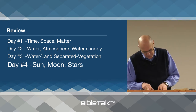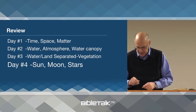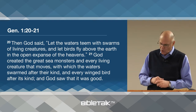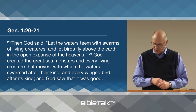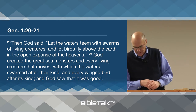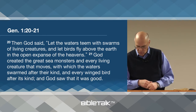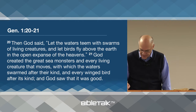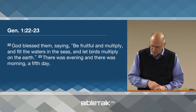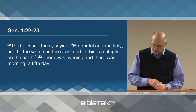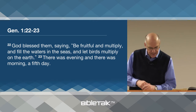In this lesson we're going to continue with the fifth day and the creation of the next order of life. Let us look at Genesis chapter 1, verses 20 and 21. It says: 'Then God said, let the waters teem with swarms of living creatures and let birds fly above the earth in the open expanse of the heavens. God created the great sea monsters and every living creature that moves, with which the water swarmed after their kind, and every winged bird after its kind. And God saw that it was good. God blessed them, saying, be fruitful and multiply and fill the waters in the seas and let birds multiply on the earth.' There was evening and there was morning, a fifth day.